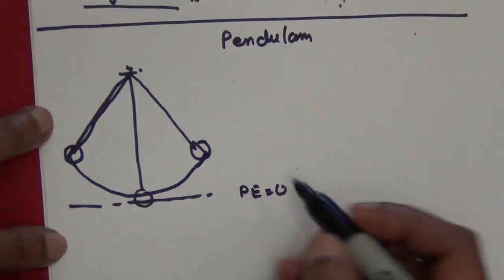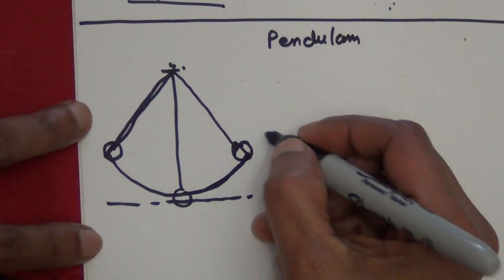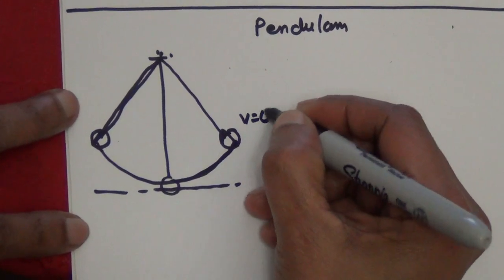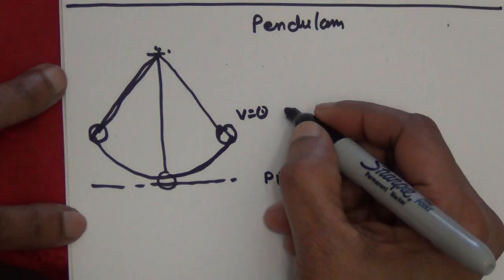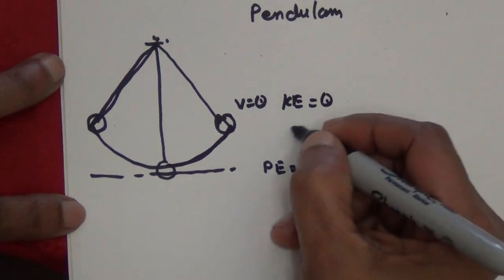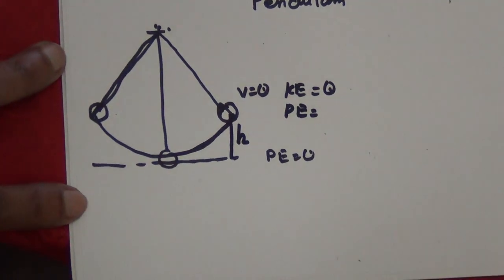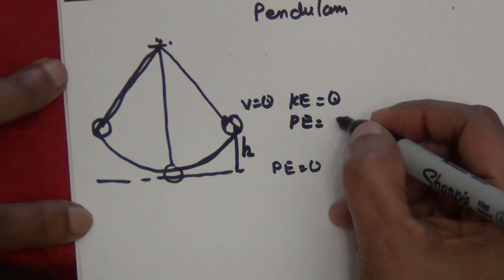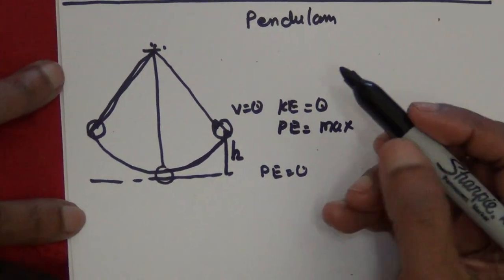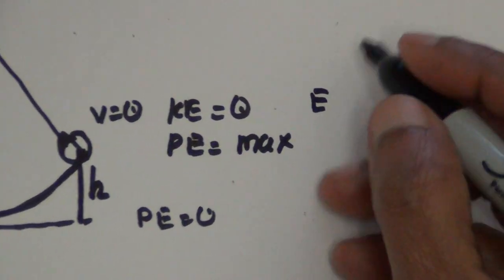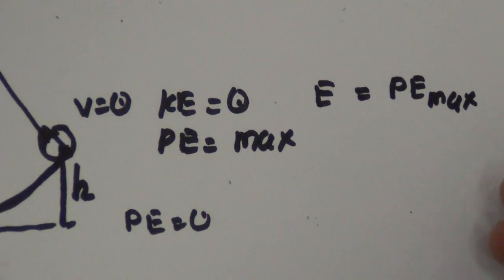The pendulum will move until its velocity becomes zero at the ends. At those endpoints, the kinetic energy is zero. The potential energy is at its maximum since that is the maximum height — so you have only maximum potential energy at the ends.